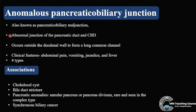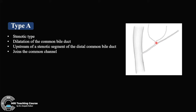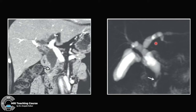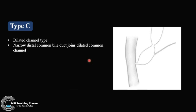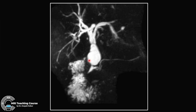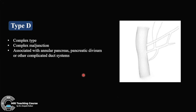Anomalous pancreaticobiliary junction (APBJ), also called pancreaticobiliary maljunction, is an abnormal junction of the pancreatic duct and common bile duct more than 13 to 15 mm outside the duodenal wall, forming a long common channel. Type A is stenotic: dilatation of the common bile duct with an upstream stenotic segment of the distal common bile duct. Type B is non-stenotic: the distal duct smoothly joins the common channel. The dilated channel type has a narrow distal common bile duct joining a dilated common channel, associated with a choledochal cyst above and a long common channel below.